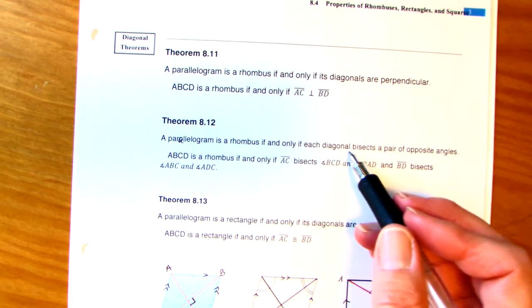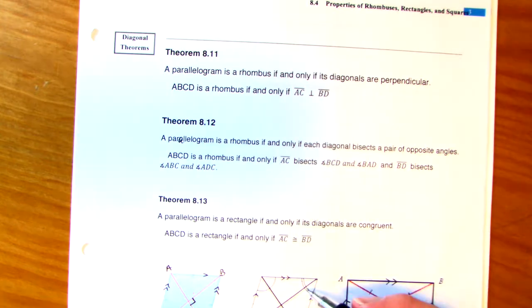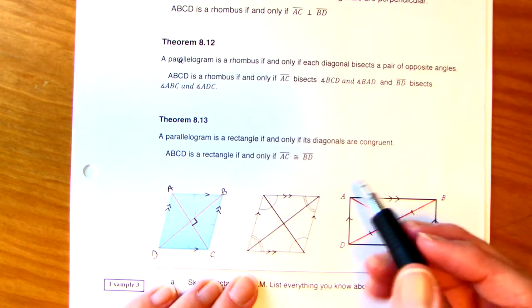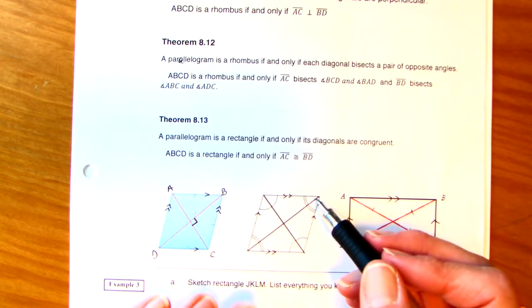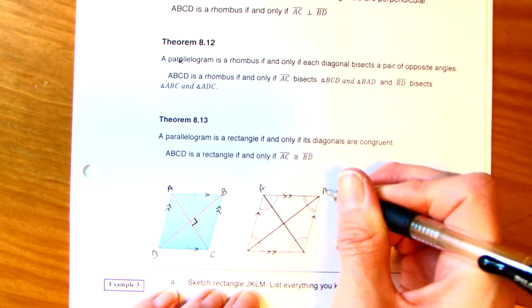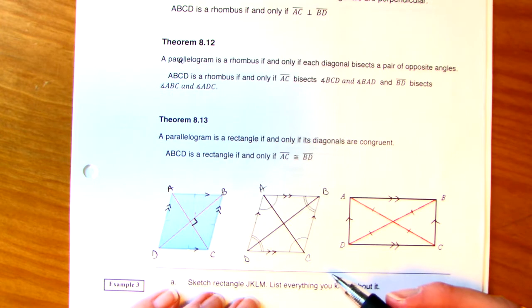A parallelogram is a rhombus if and only if each diagonal bisects a pair of opposite angles. So opposite angles bisect. See, this side is congruent to that. This is congruent to that. And opposite angles are congruent. You can see it. So rhombus ABCD is a rhombus if and only if AC bisects these two angles and BD. I should label these. A, B, C, D. They bisect the angles also. So that means this is the same as this. This is the same as that.